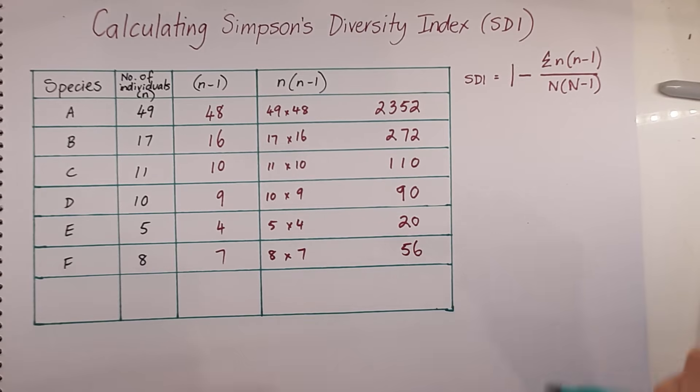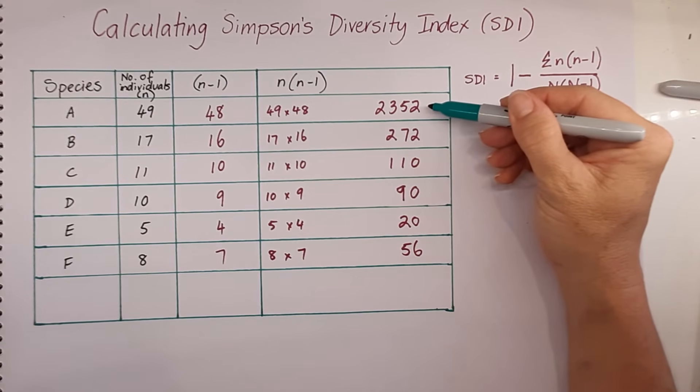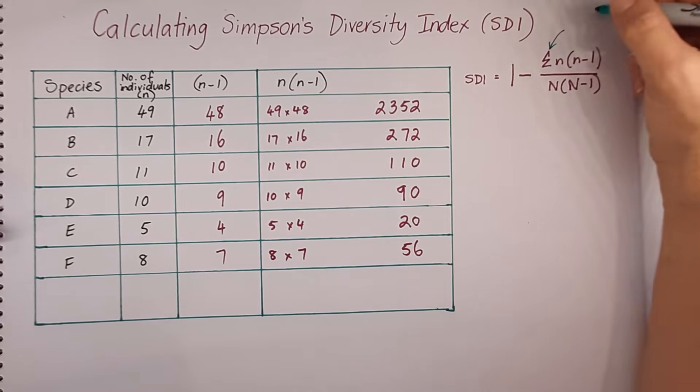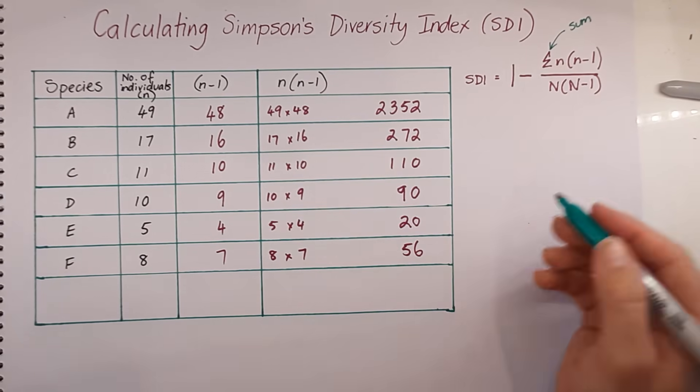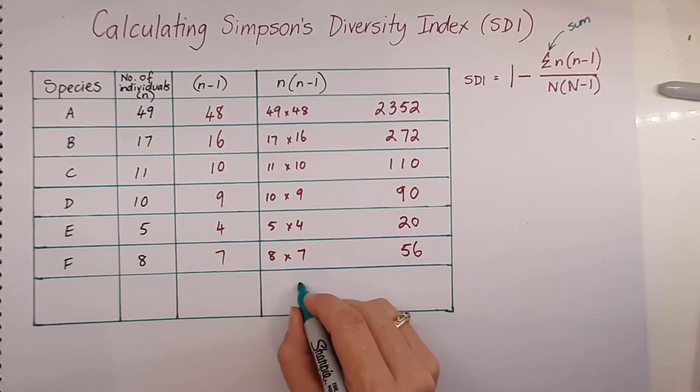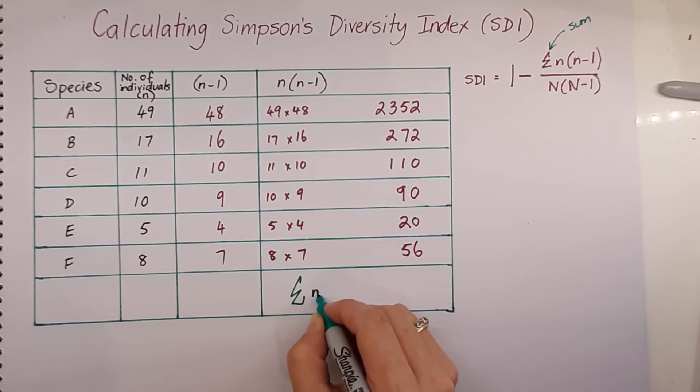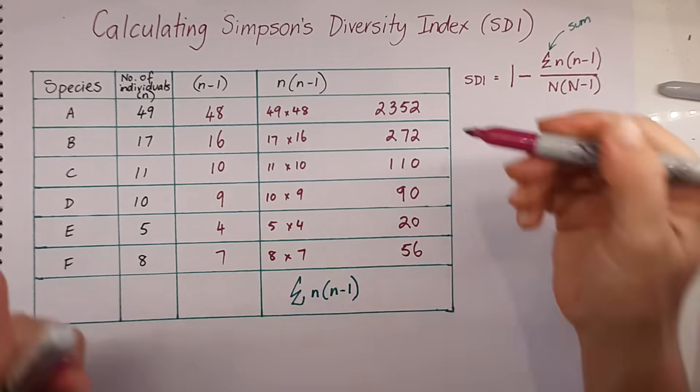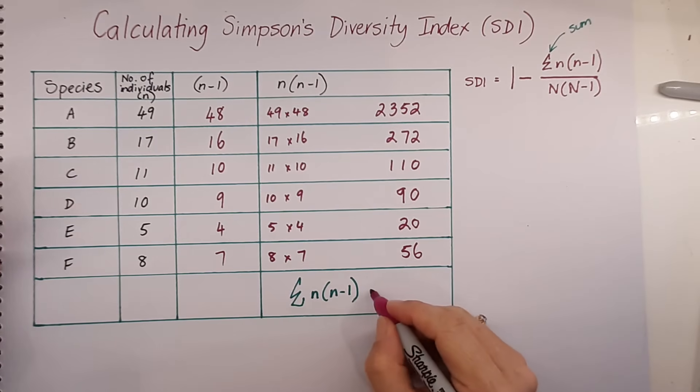So we have all of the n multiplied by n take 1 for each species. But in our formula, the sigma here means to sum all of those values. So in our case, for us to work out the sum of n times n take 1, we need to add up all of these values. And in this case, they come to 2,900.